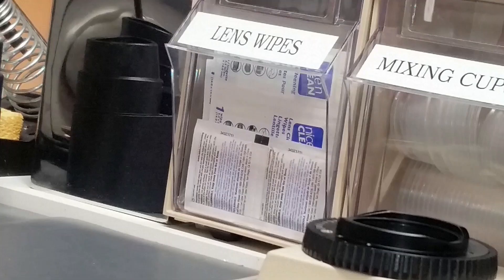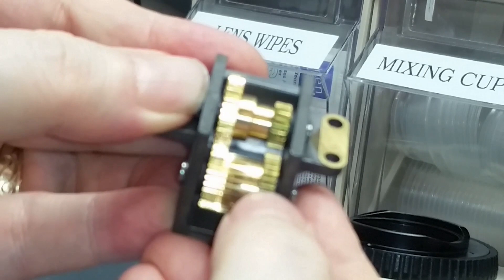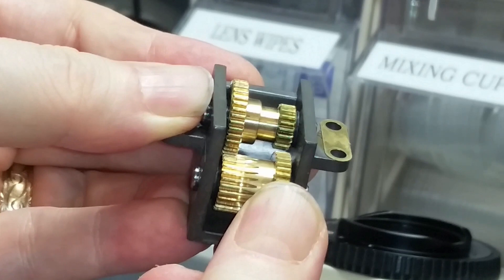Now this gearbox is typical of what you'll see on an eBay scope. It's very stiff as you can see. I can just barely rotate this. It's all I can do to rotate this without the skin coming off of my thumb, to be honest. It is very stiff.